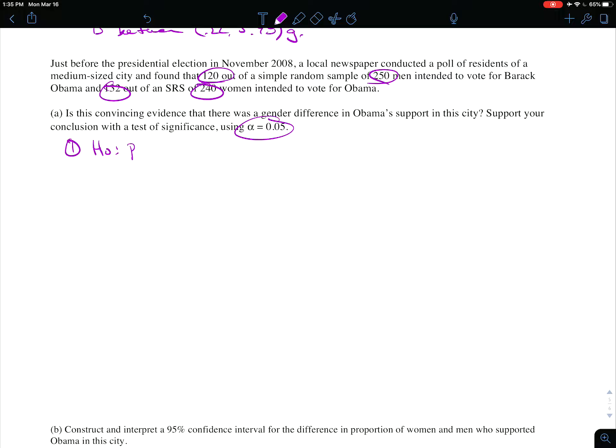Okay, so hypothesis test, right? It's answering a yes or no question: is there a difference? Therefore, it's a test, not an interval. Let's see, who had the higher proportion? The women had the higher proportion, so we'll go p_W minus p_M equals zero. That there's no difference versus p_W minus p_M not equal to zero. Just was gender a factor, not were the women higher or lower, but just was there a difference.